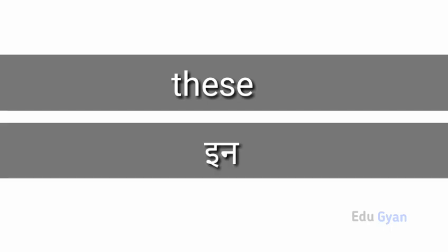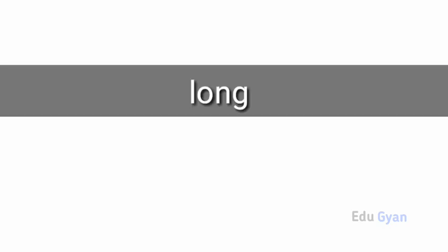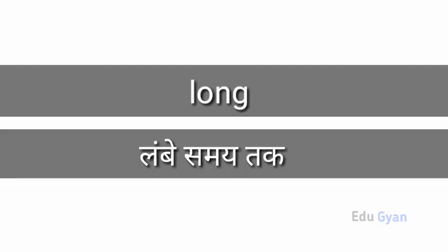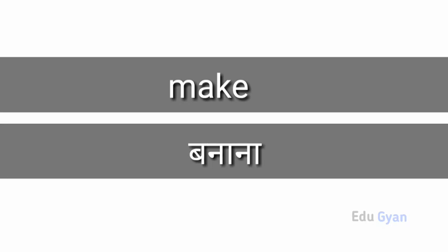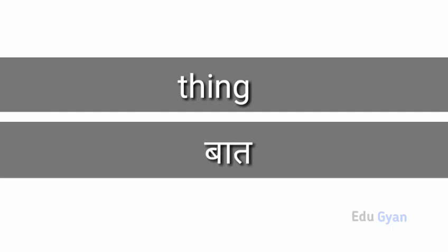These means in. This means in. Her means uske. Long means lambe ya lambe samayi tak. Make means banana. Thing means bat.